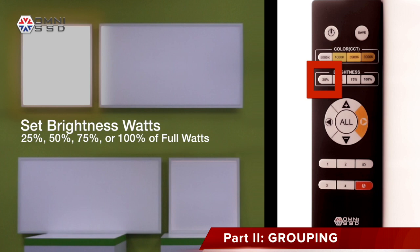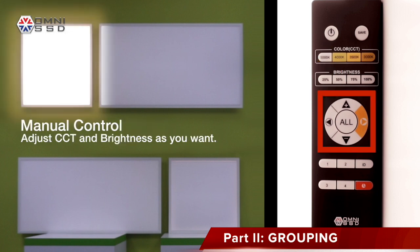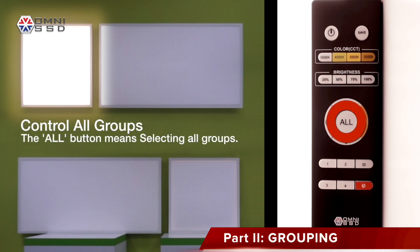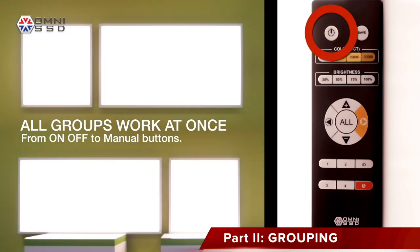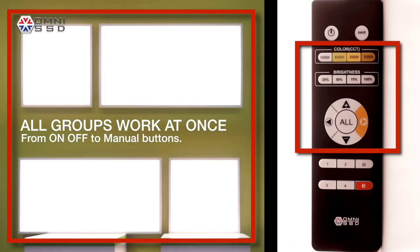You can also adjust the color temperature or brightness with these buttons manually. When you need to control all groups at the same time, press the all button — that means you've selected all groups — and you can control all functions for all groups, from powered to manual control. Thank you and enjoy.